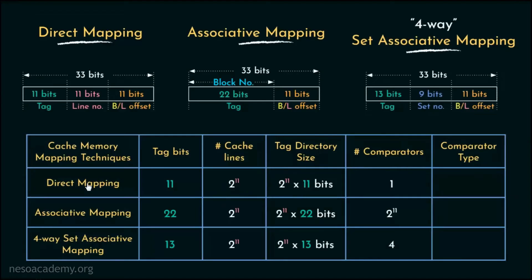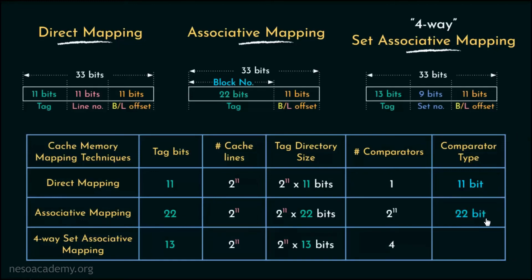To summarize: the number of comparators needed for direct mapping will always be 1; for associative mapping it equals the number of cache lines; and for k-way set associative mapping it depends on the value of k, which in this case is 4. The type of comparators depends on the tag size, because we compare the tags associated with cache lines against the tag field of the physical address to determine a block's presence or absence in cache. For direct mapping, we need one 11-bit comparator; for associative mapping, 2 to the power 11 22-bit comparators; and for 4-way set associative mapping, 4 13-bit comparators.